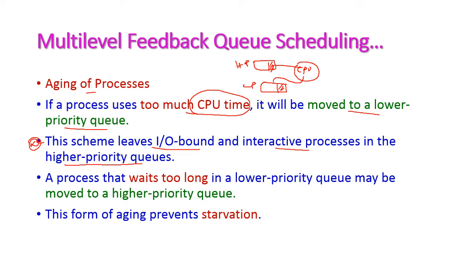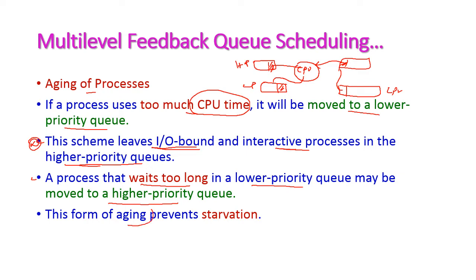This preemption is not applicable to I/O-bound or interactive processes in higher priority queues. The second situation is: if a process waits too long in a lower priority queue, it will be moved immediately to a higher priority queue for CPU execution. This is called aging, and it is used to prevent starvation — because if a process is waiting in a low priority queue, it will not get the CPU. To overcome starvation, aging is introduced in multi-level feedback queue scheduling.